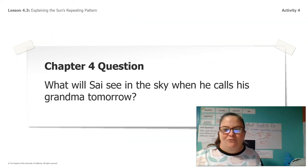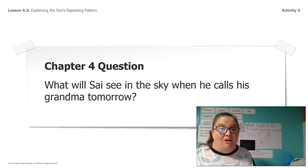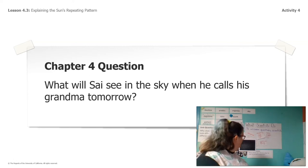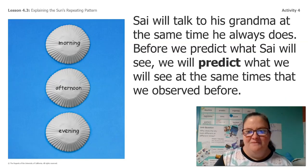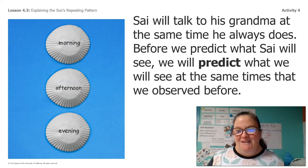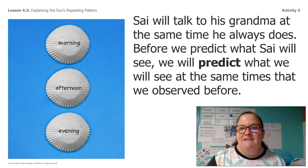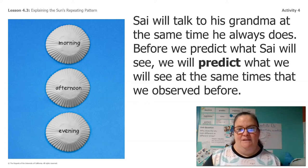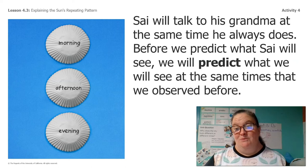So what do you think? Do we have enough information and evidence to answer our chapter four question? What will Psy see in the sky when he calls his grandma tomorrow? Remember our chapter four question? Do we have enough information? Let's practice communicating what we learned so that we can write our letter to Psy again. Psy will talk to his grandma at the same time he always does. Before we predict what Psy will see, we will predict what we will see at the same times we observed before.